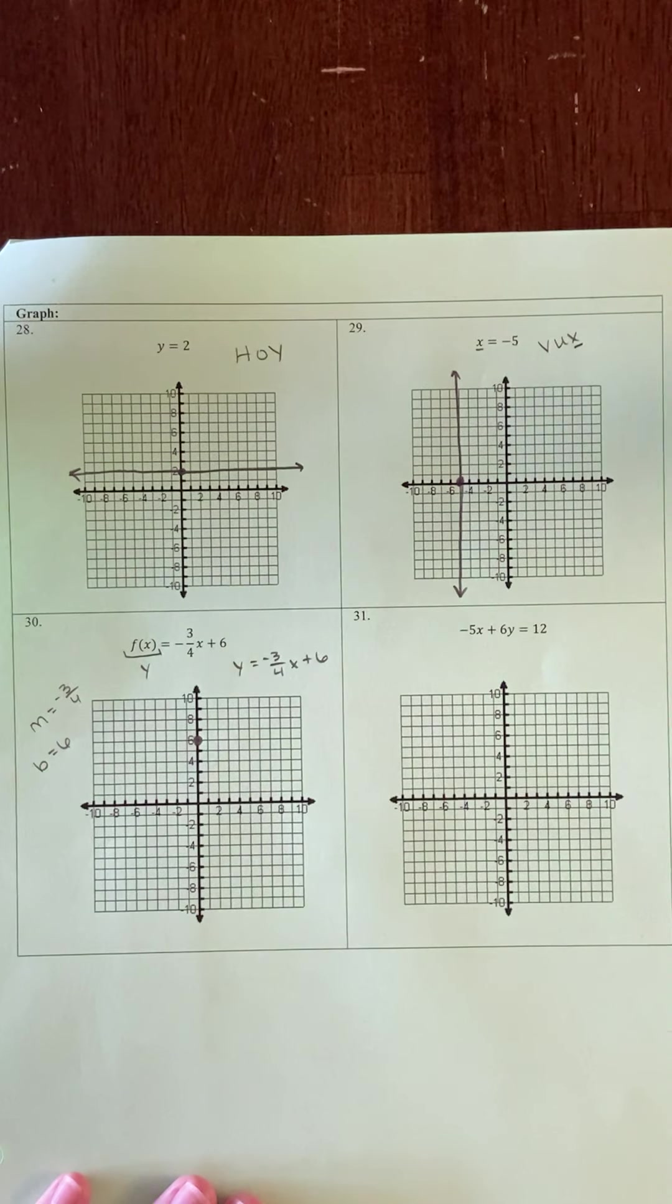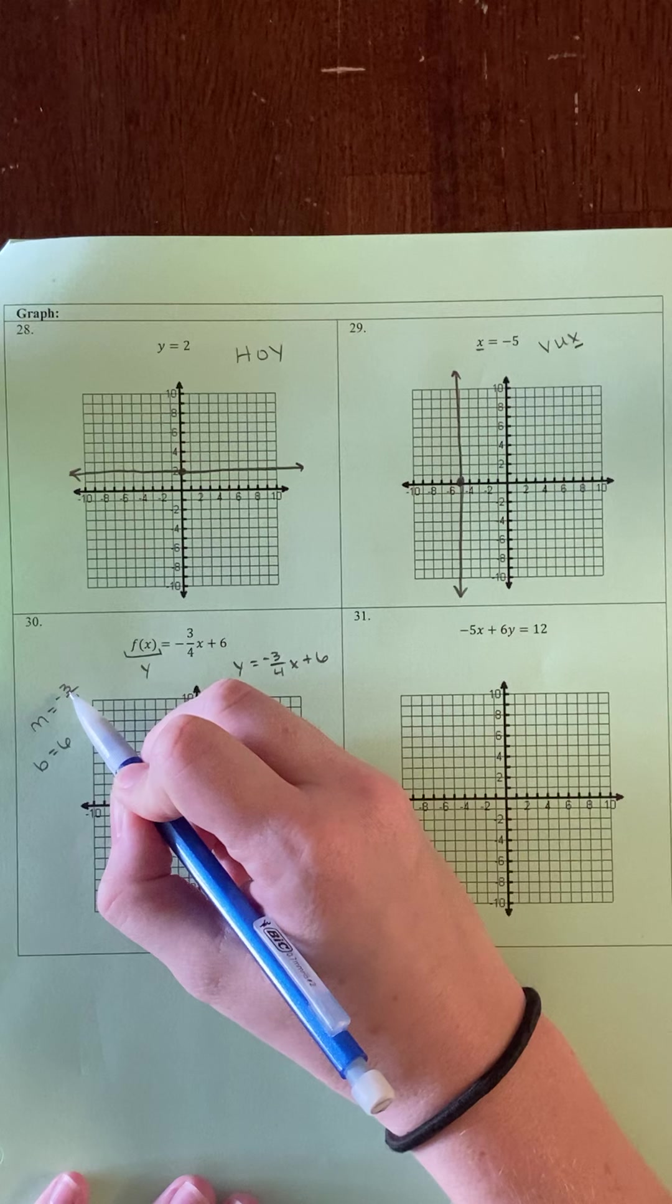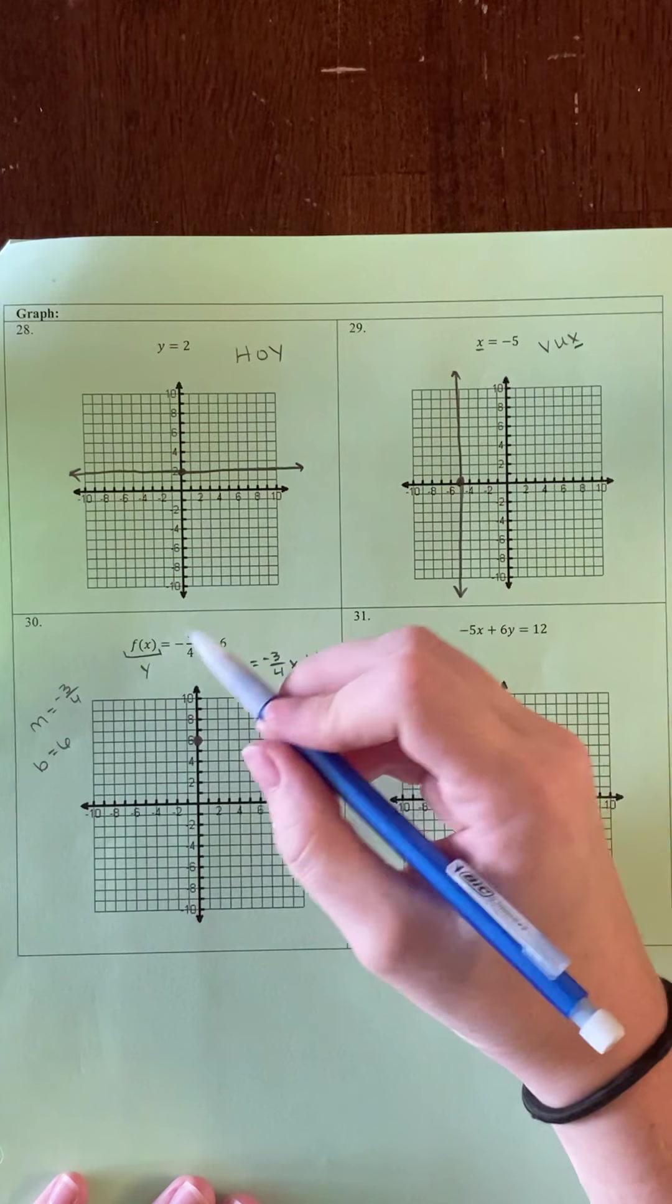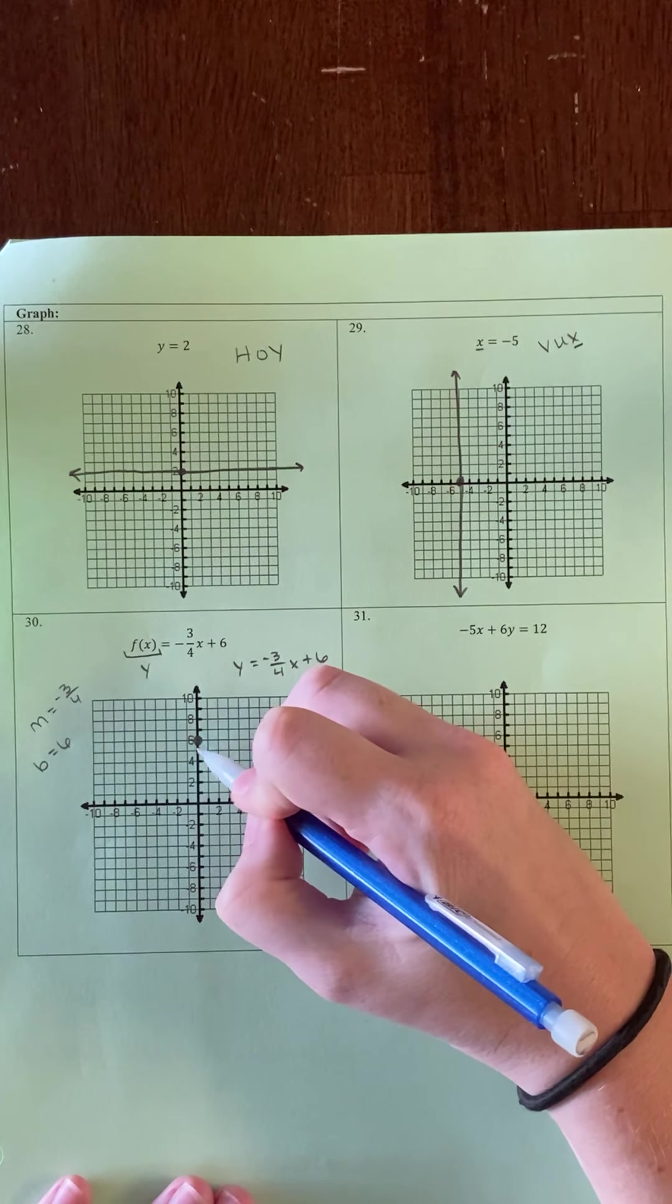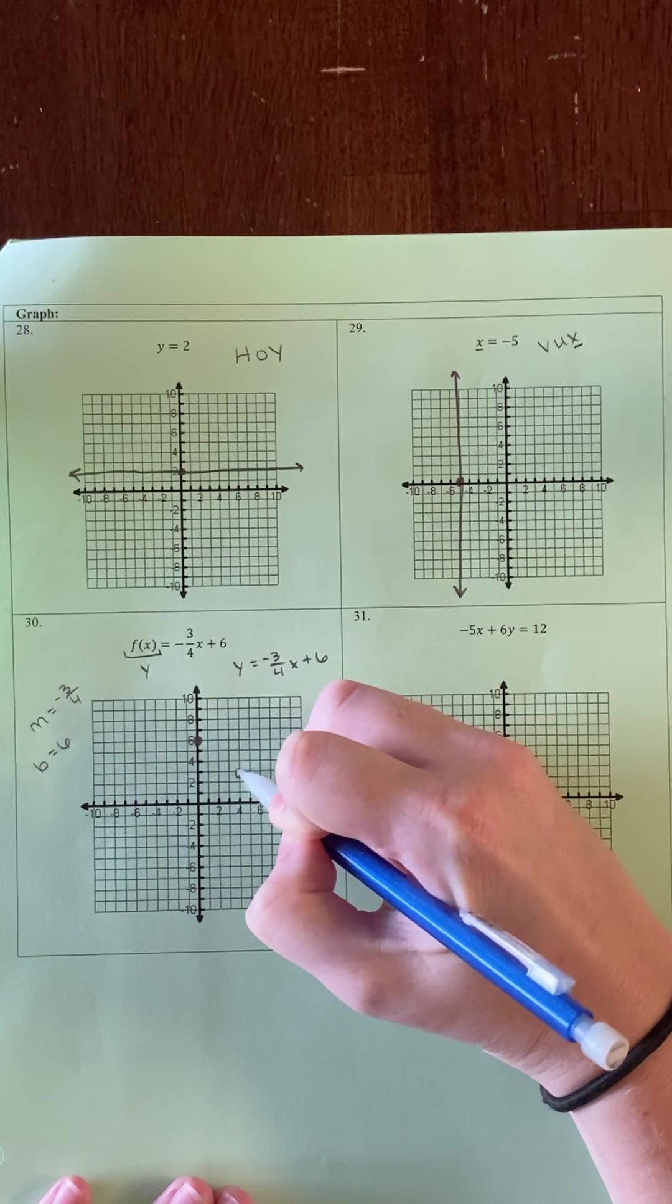Then I'm going to go from that point with my slope. My slope is negative 3/4, which means down 3, right 4. So starting at my y-intercept, I'm going to go down 3, right 4, and plot a point.